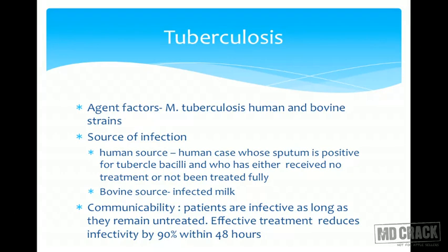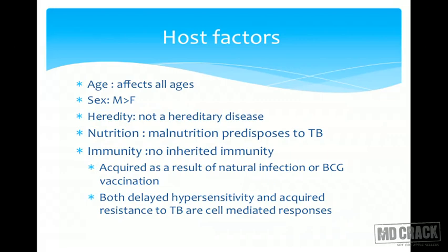The agent of tuberculosis is a bacteria called Mycobacterium tuberculosis. There are both human and bovine strains. Fortunately, because of the practice of boiling milk before consumption, bovine tuberculosis is becoming an increasingly rare disease. The sources of infection are open cases of humans and bovine sources like infected milk. Patients are infective as long as they remain untreated, but effective treatment can reduce infectivity by 90 percent in just two days — compared to leprosy, where it took three weeks with rifampicin.